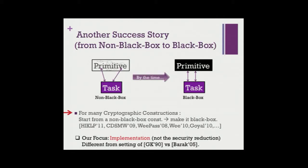There is a second relevant success story: for many cases in crypto, we started with a non-black-box construction of some primitive based on another primitive, and by hard work we could get rid of the non-black-box feature and make the construction truly black box. Examples include secure computation and variants of commitment schemes. I want to clarify that this success story is not about security reductions — whenever I say black box or non-black box in this talk, I'm talking about the implementation of your protocol.